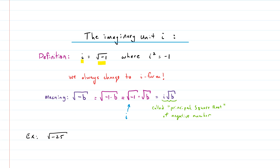The imaginary unit i is defined as the square root of negative one. If we square both sides of this definition, that gives us a second key identity: i squared equals negative one. Those two definitions are used all the time. When dealing with imaginary numbers, we generally want to change everything to i form — the negative inside a square root can come out in front as an i.